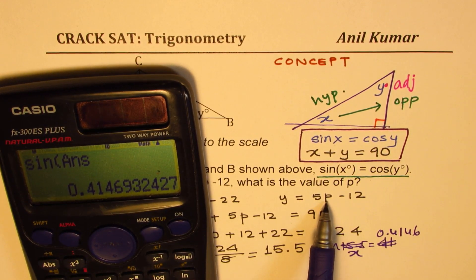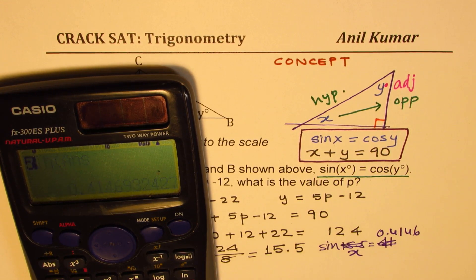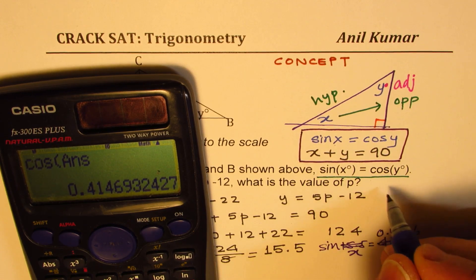Similarly, if I write 15.5 for p, I get 5 times 15.5 minus 12 equals to, whatever you get. For that, we'll find cosine. So we get cosine of our answer, which is equal to the same thing.